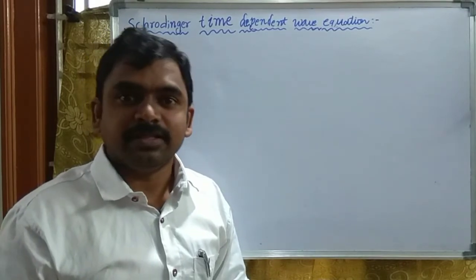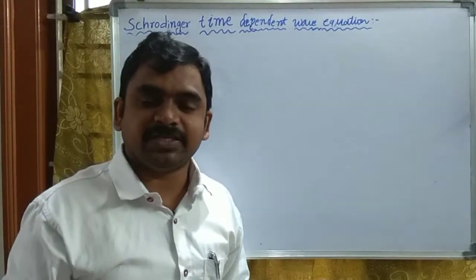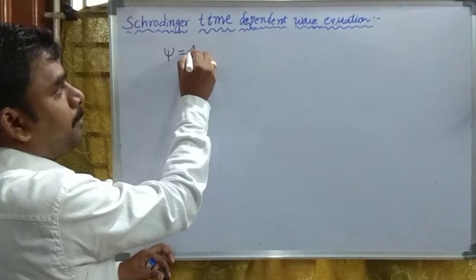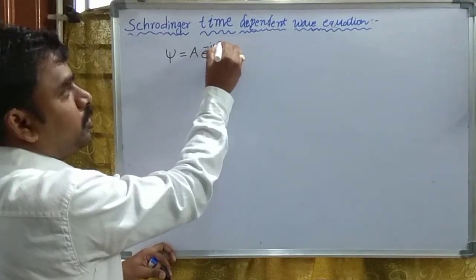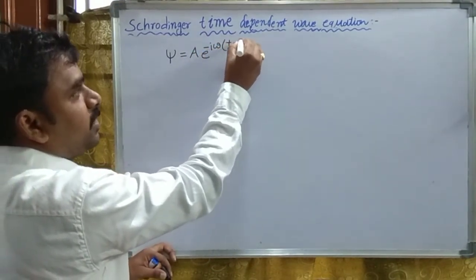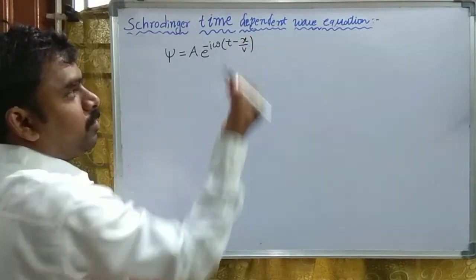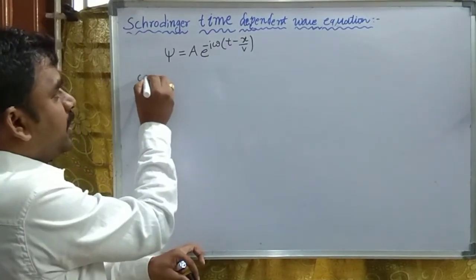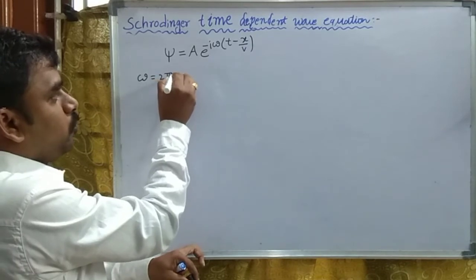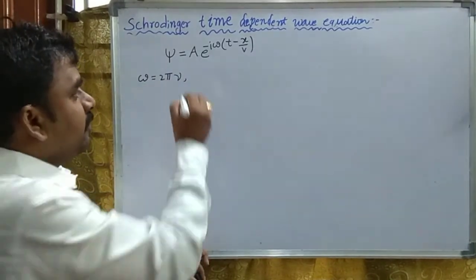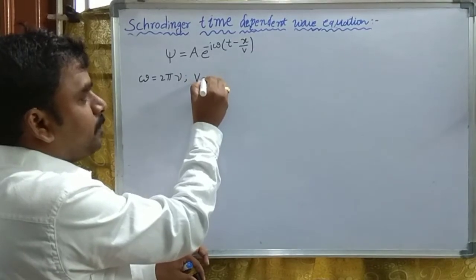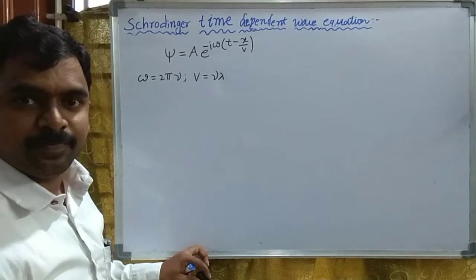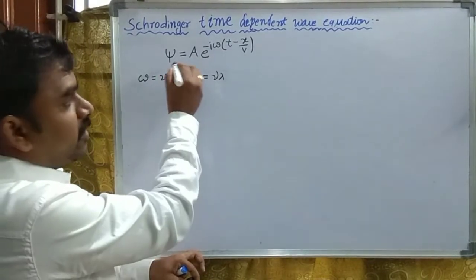That expression we are calling as the wave function, which I am taking as: psi equals to A·e to the power minus i·omega·(t minus x/v). This is a one-dimensional form. Here omega is the angular frequency, that is omega equals to 2·pi·nu, and v is the velocity of the particle, so v equals to nu·lambda.